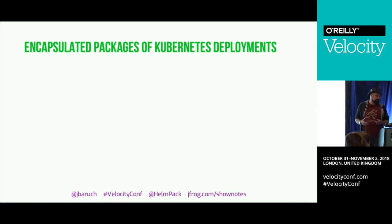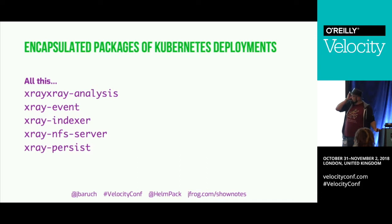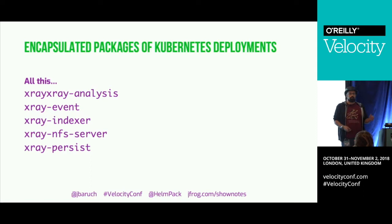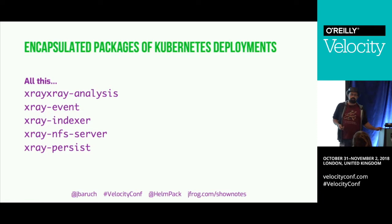Here's an example: this used to be our Kubernetes deployment of JFrog X-Ray — microservices as it should be. We have a bunch of microservices. If we want to instruct customers how to install X-Ray, we could tell them to go copy-paste all the YAMLs from our GitHub. Good luck fixing indents for each one of them.